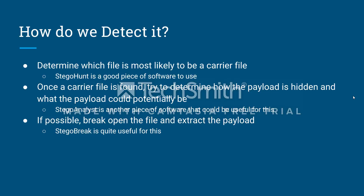Second, once we find a carrier file, we must try to determine two things: one, how the payload is hidden, and two, what the payload could be, as both are essential to the extraction process. Finally, if possible, we must break the file open and attempt to extract the payload.